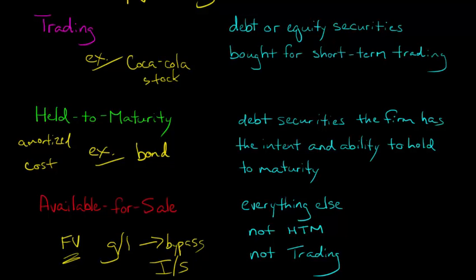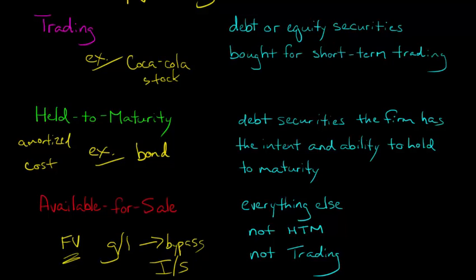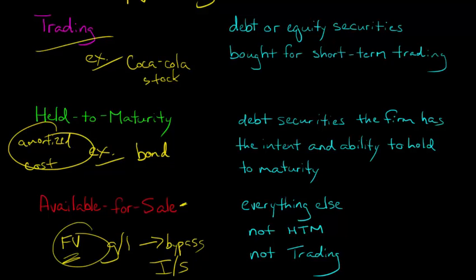That's if the firm makes an irrevocable election — a firm can actually choose to say we want our held-to-maturity and our AFS securities to be not only recorded at fair value, but also have any gain or loss go to the income statement. The default is that HTM and AFS securities will be accounted for a little differently than trading, with HTM being at amortized cost and available for sale at fair value with any gain or loss bypassing the income statement. These are the three types of short-term investments you'll see in the current assets section on a balance sheet.